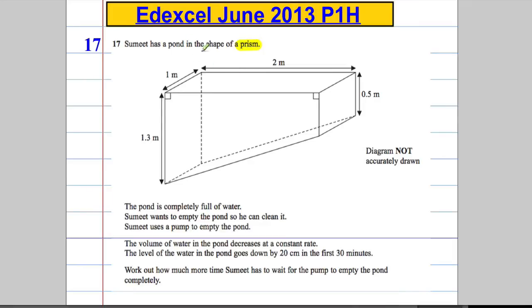The pond is completely full of water and he wants to empty the pond so he can clean it. He uses a pump to empty the pond. The volume of water decreases at a constant rate, and the level of the water goes down by 20 centimeters in 30 minutes. Work out how much more time Summit has to wait for the pump to empty the pond.